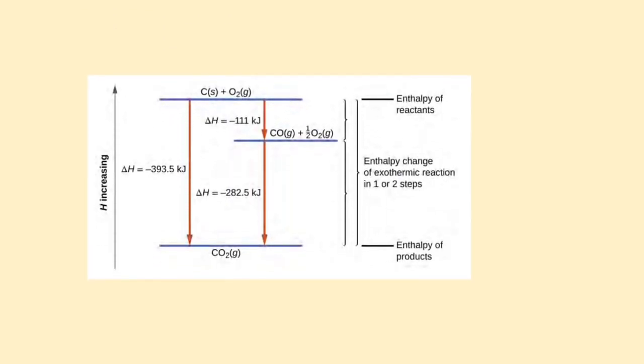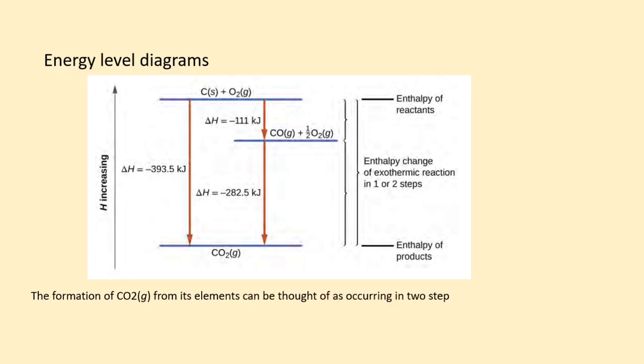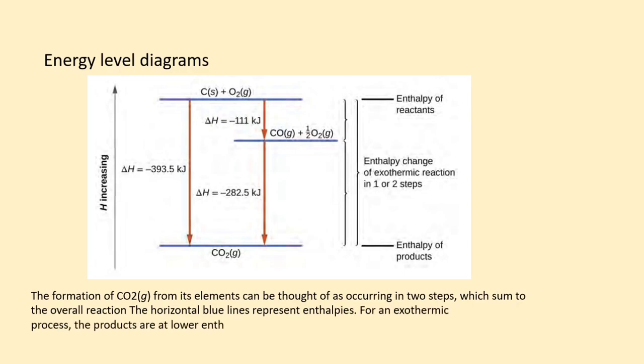Here is an example of an energy level diagram drawn for the formation of CO2 from its elements. The formation of CO2 from its elements can be thought of as occurring in two steps, which sum to the overall reaction. The horizontal blue lines represent enthalpies. For an exothermic process, the products are at lower enthalpy than are the reactants.